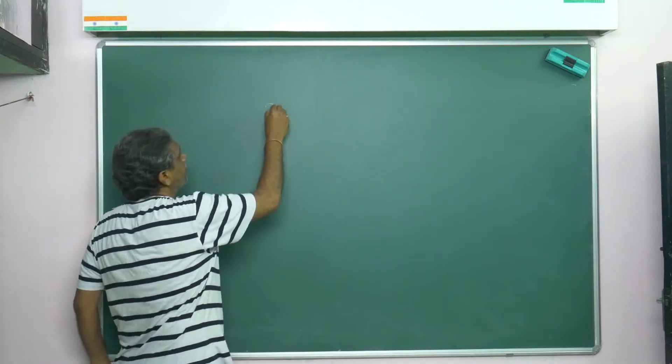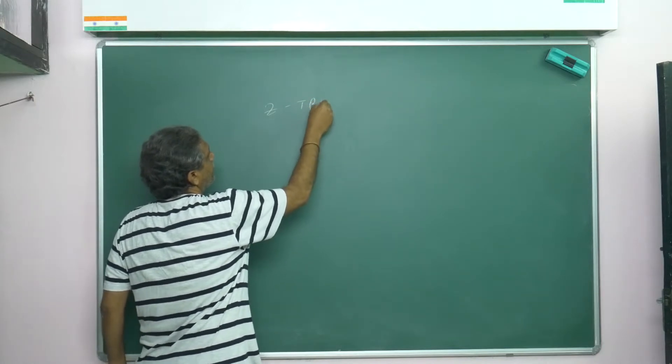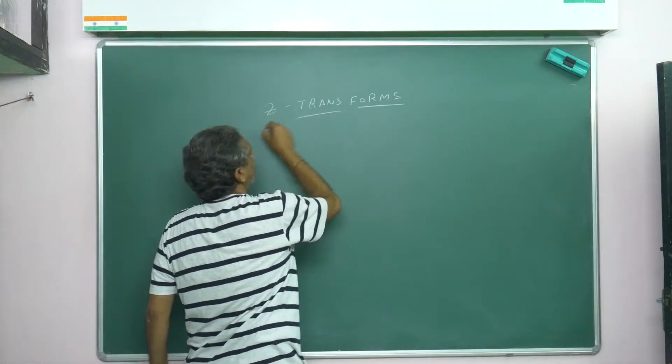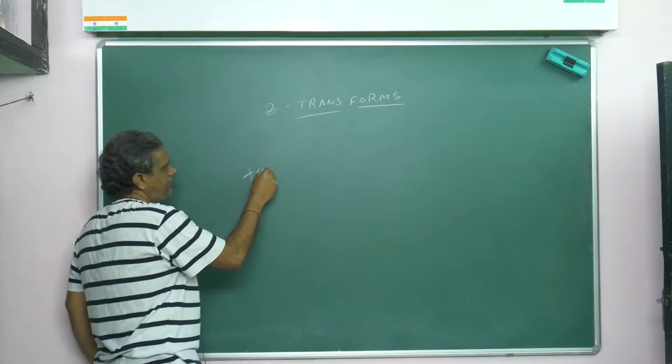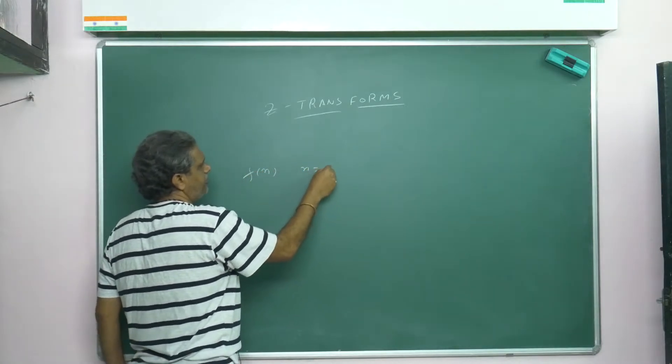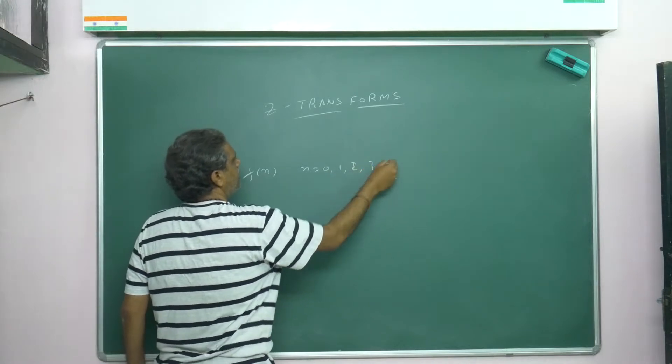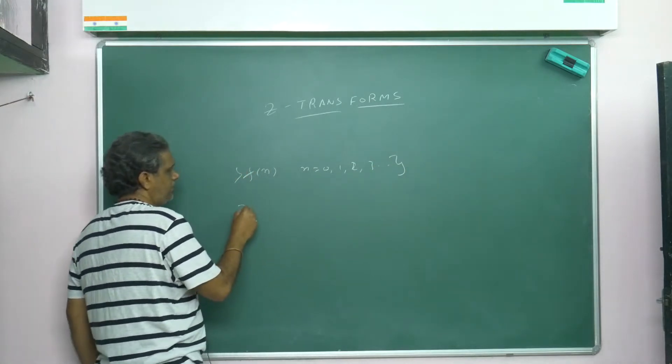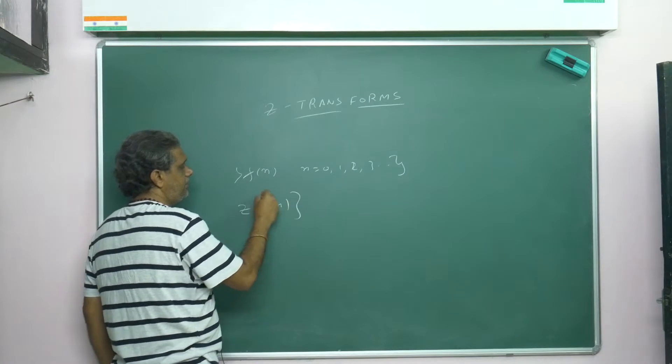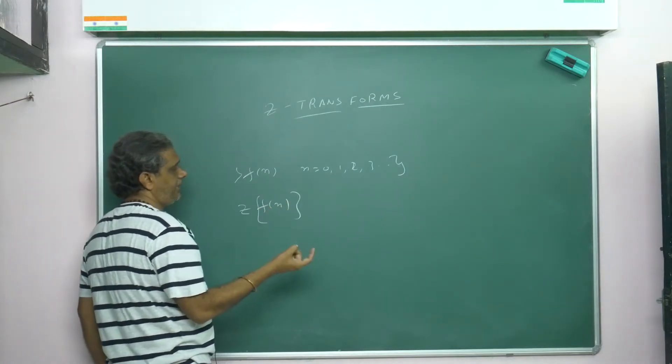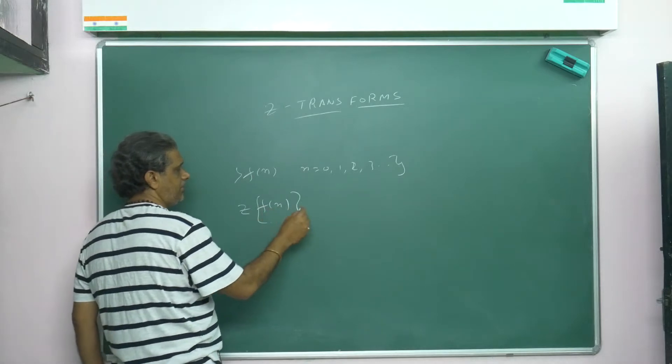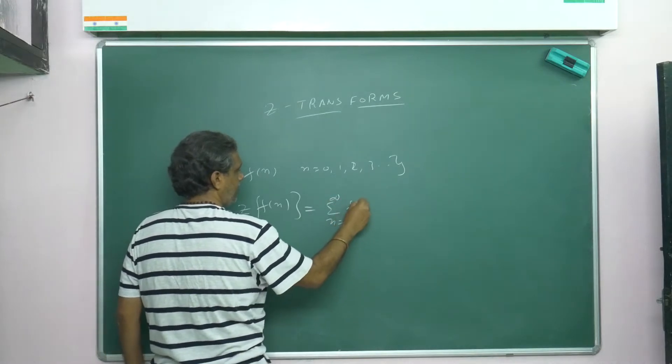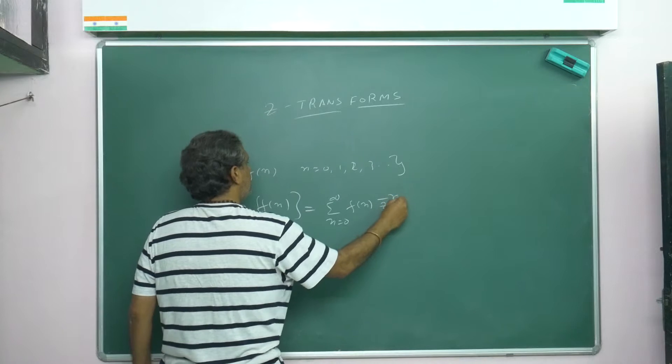How will you define this actually? f(n) is a sequence defined where n is equal to 0, 1, 2, 3, and so on. At n=0, the functional value is defined. Suppose these are integers. The Z-transform of f(n), they can write as Z{f(n)} or Z{f(k)}. Some textbooks use k, some use n. I am using n here.